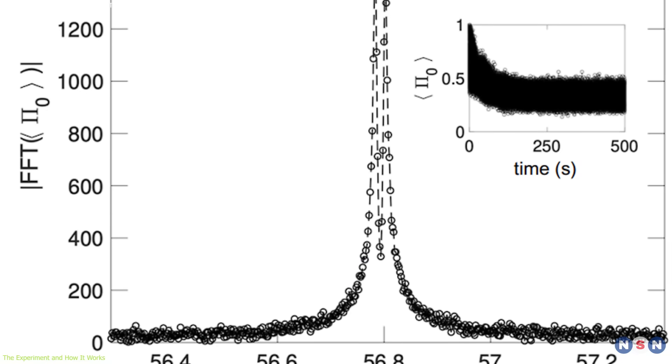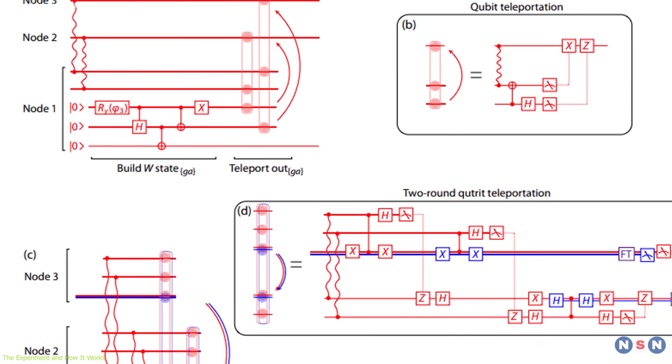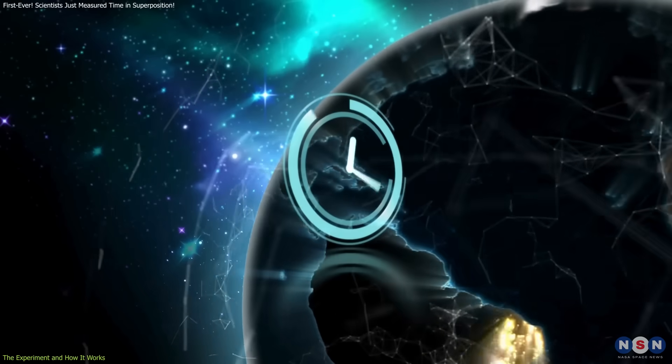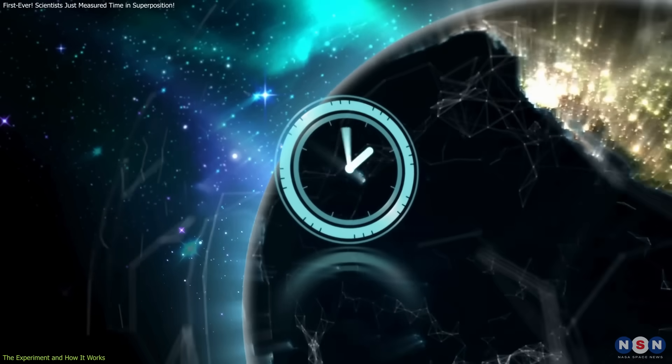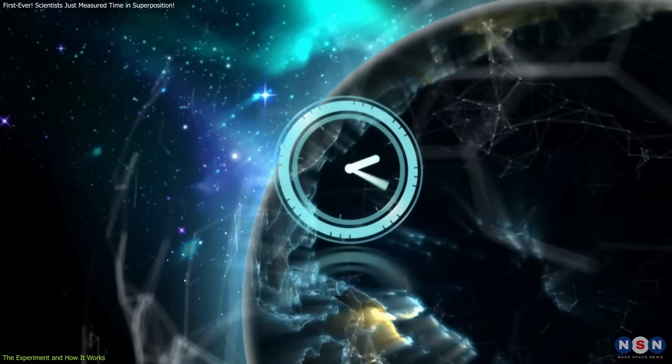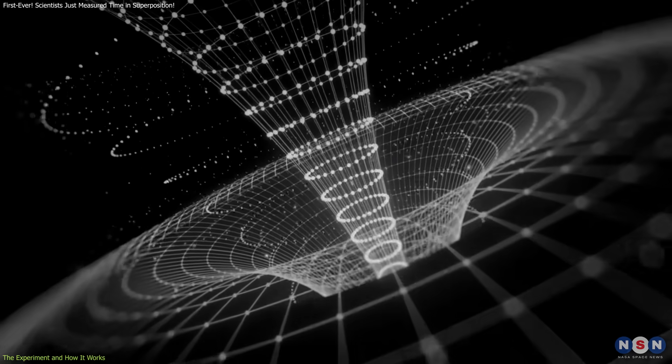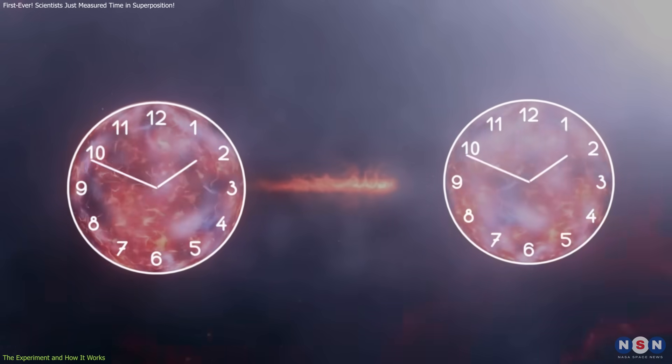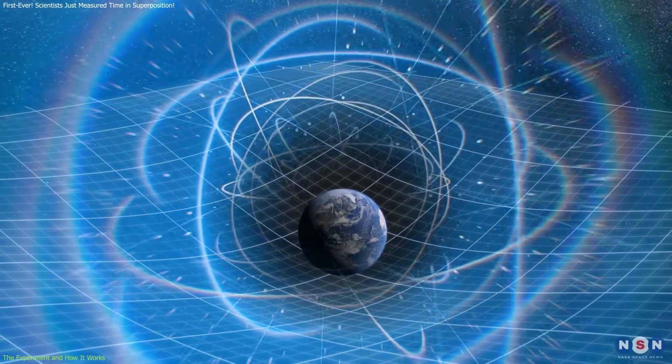What makes this test unique isn't the presence of interference, but how that pattern changes with varying gravitational gradients. If the clock maintains its quantum coherence, meaning the superposition remains intact despite unequal time flows, it suggests that quantum mechanics can operate reliably even in curved spacetime. If coherence weakens or vanishes, it could point to new physics at the intersection of gravity and quantum behavior.